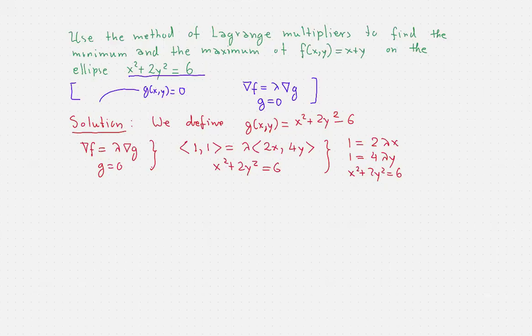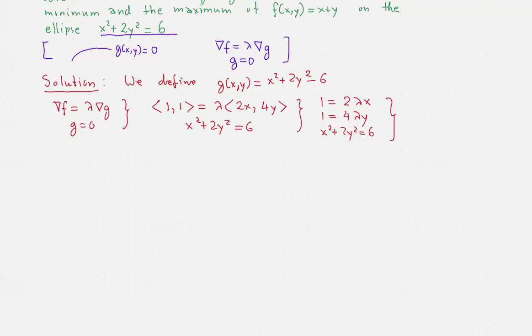So this is a nonlinear system and there are no general methods for solving nonlinear systems. It's very easy to run into a nonlinear system that we cannot solve. However, for this one, our starting point is the fact that lambda, x, and y are all different from 0.